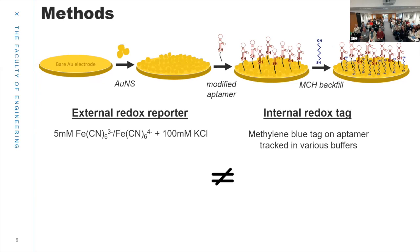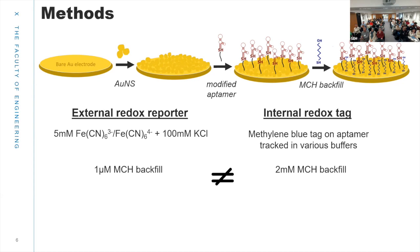The main differences between the two methods: method one uses a ferri/ferrocyanide redox couple to track biosensor performance, while the internal redox tag is the methylene blue label directly on the aptamer. For backfilling in method one, the optimal MCH concentration — after optimization — is equal to the aptamer concentration, which is one micromolar; using more, such as two millimolar, seems to interfere with the aptamer. For the internal redox tag, one millimolar MCH works fine as the literature suggests.